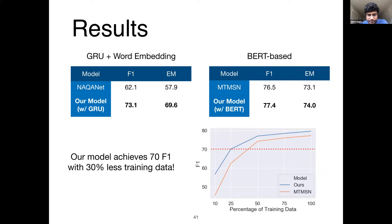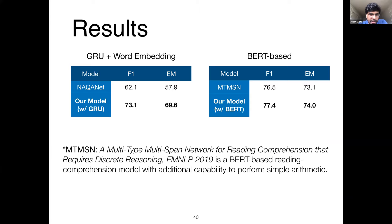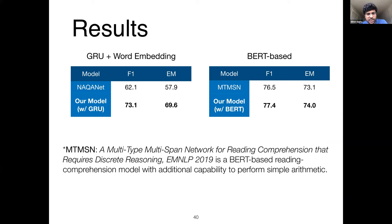The comparison model MTMSN uses BERT representations with a thin layer adding operations required for this dataset — addition, subtraction, counting. Even though end-to-end performance is quite similar, one key advantage of our model is that the decision making process is interpretable. We also show that to achieve 70 F1, our model requires 30% less training data, illustrating the benefit of compositionality and modularity.